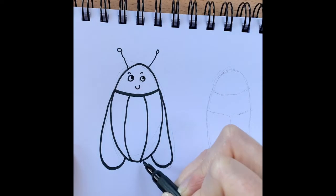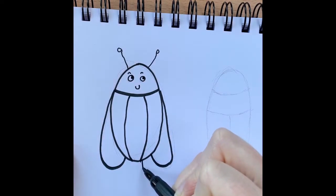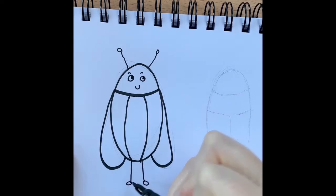Now I'm going to add some legs. So we're going to do a bit like the antennae. A line, a little circle. Like that.